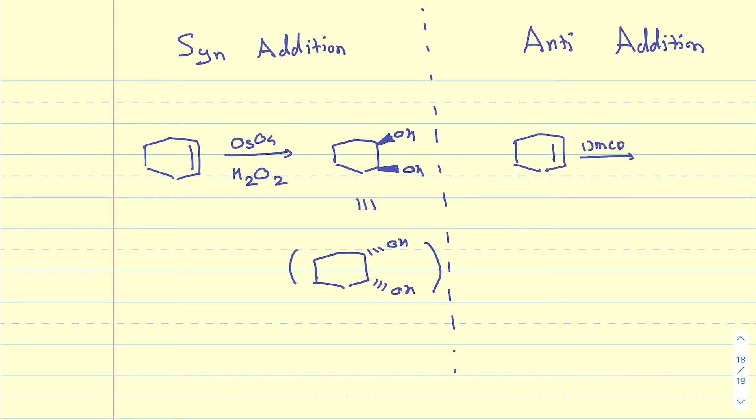But if I do MCPBA first, create an epoxide, and then open that up with acid, what is going to happen is that the two OHs are going to be added from opposite sides. So I'm going to get two different possibilities, and I'm going to get both of them.